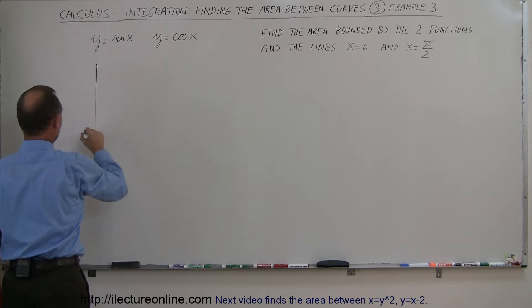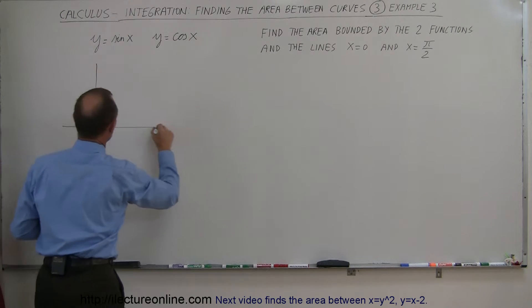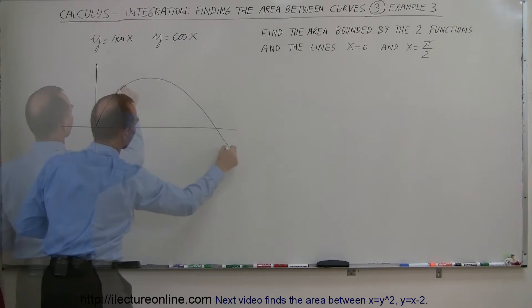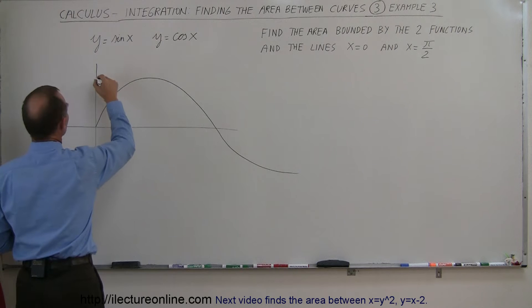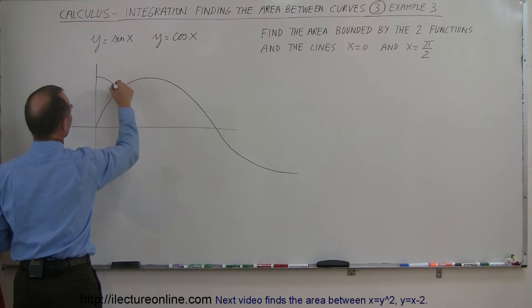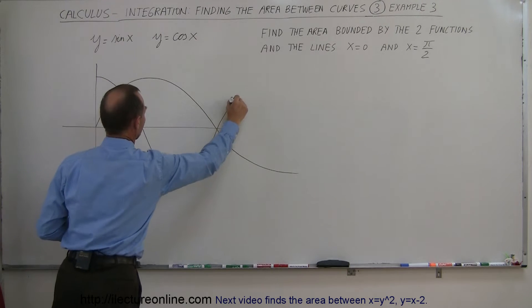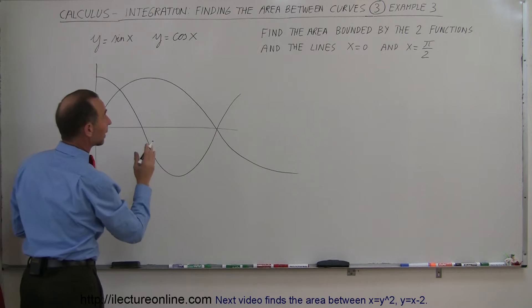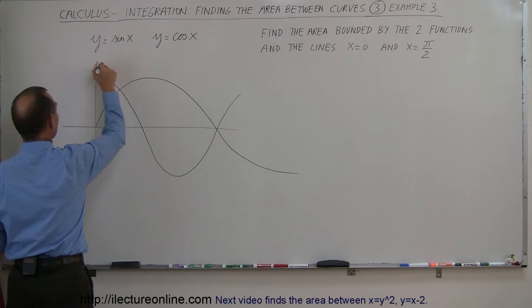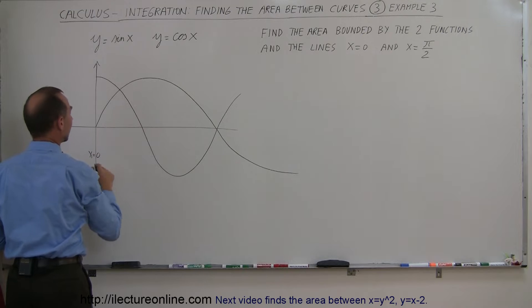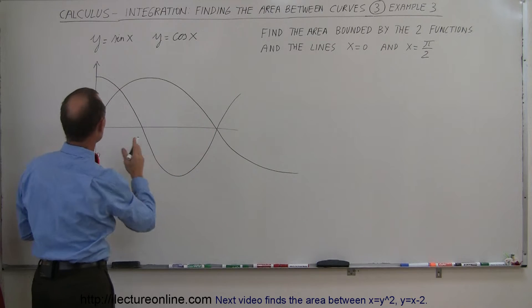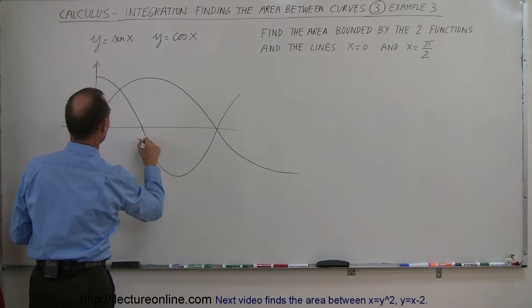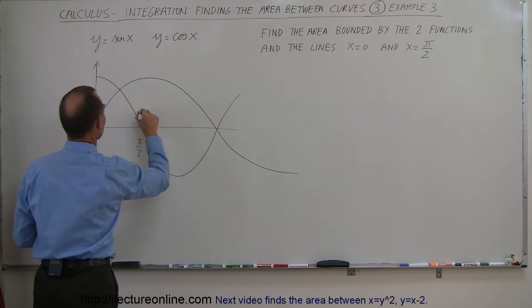If we graph this, the sine of x looks like this, and the cosine of x starts up here and comes down like this. Since we're bounding it by the line x equals 0 — that is the y-axis — and the line x equals pi over 2, pi over 2 would be right there.